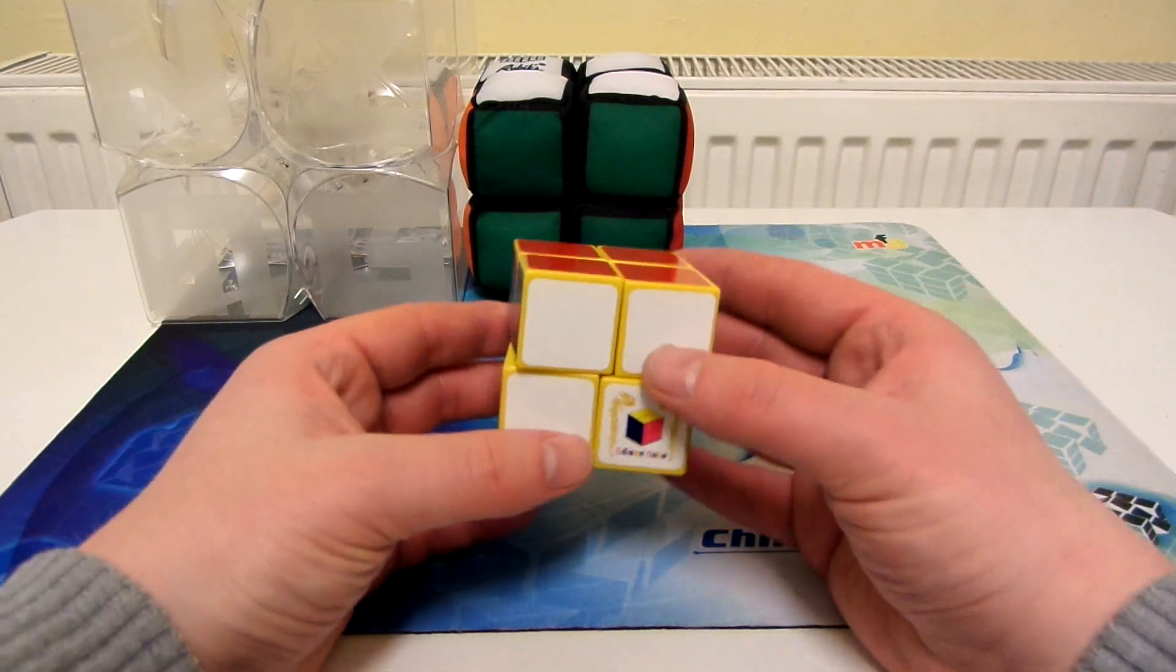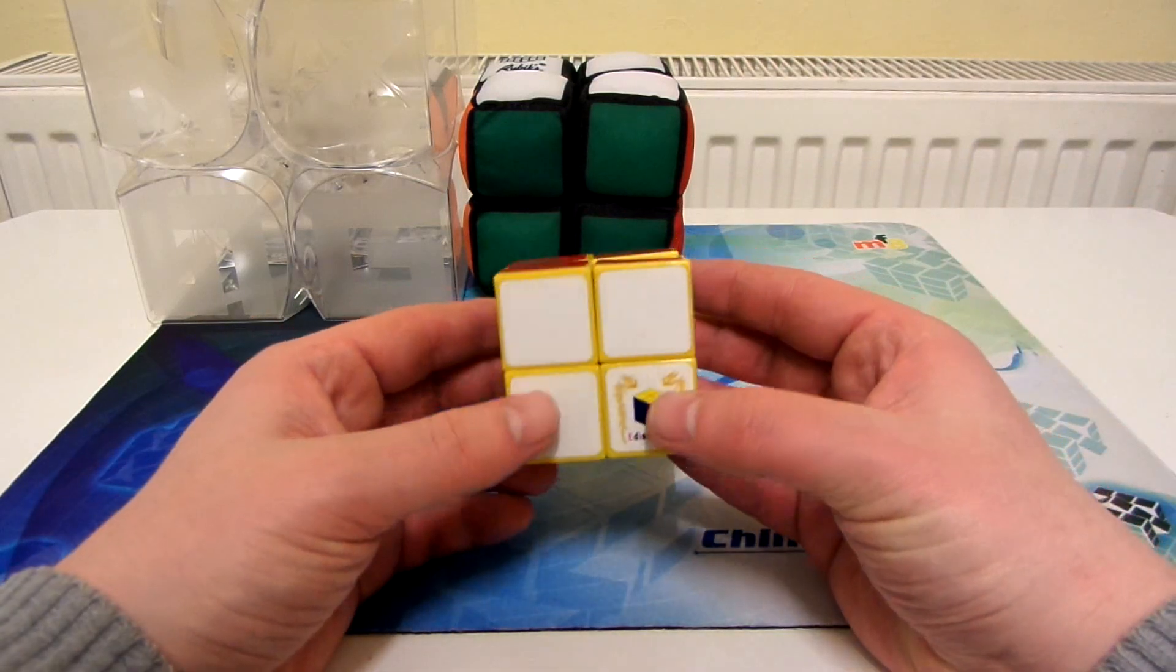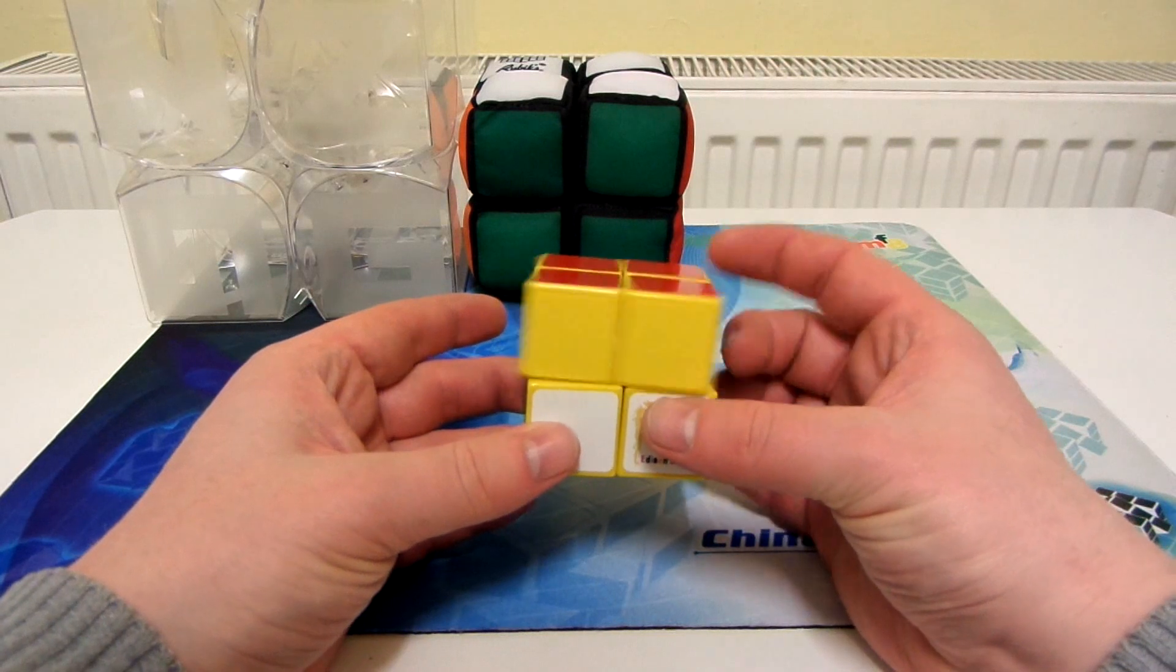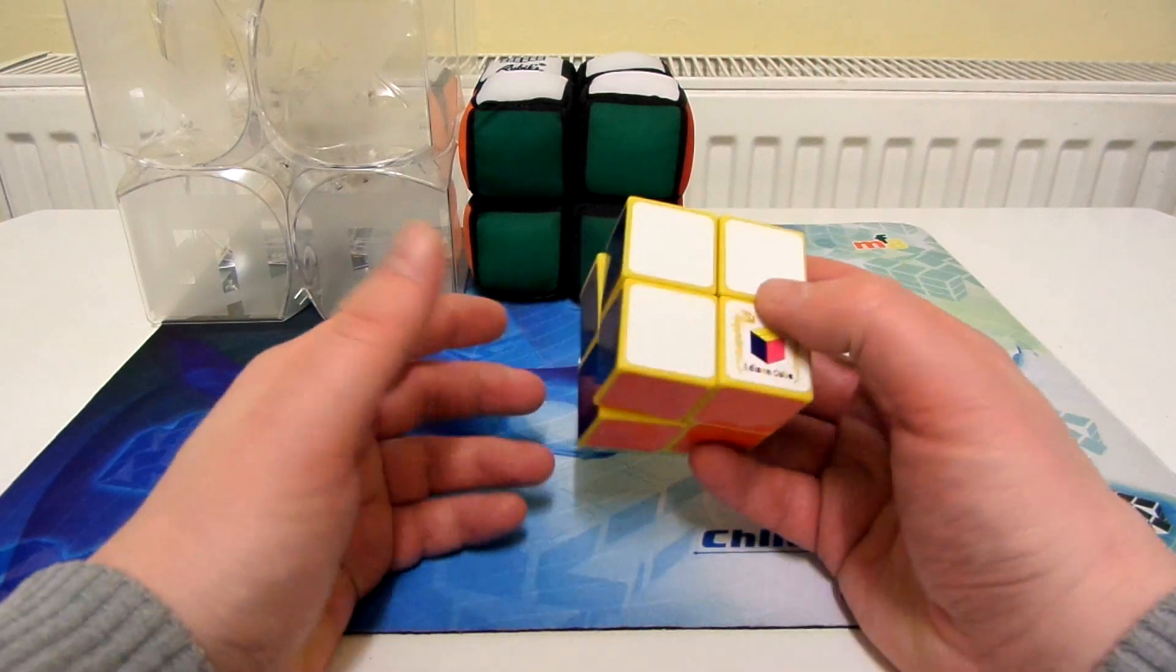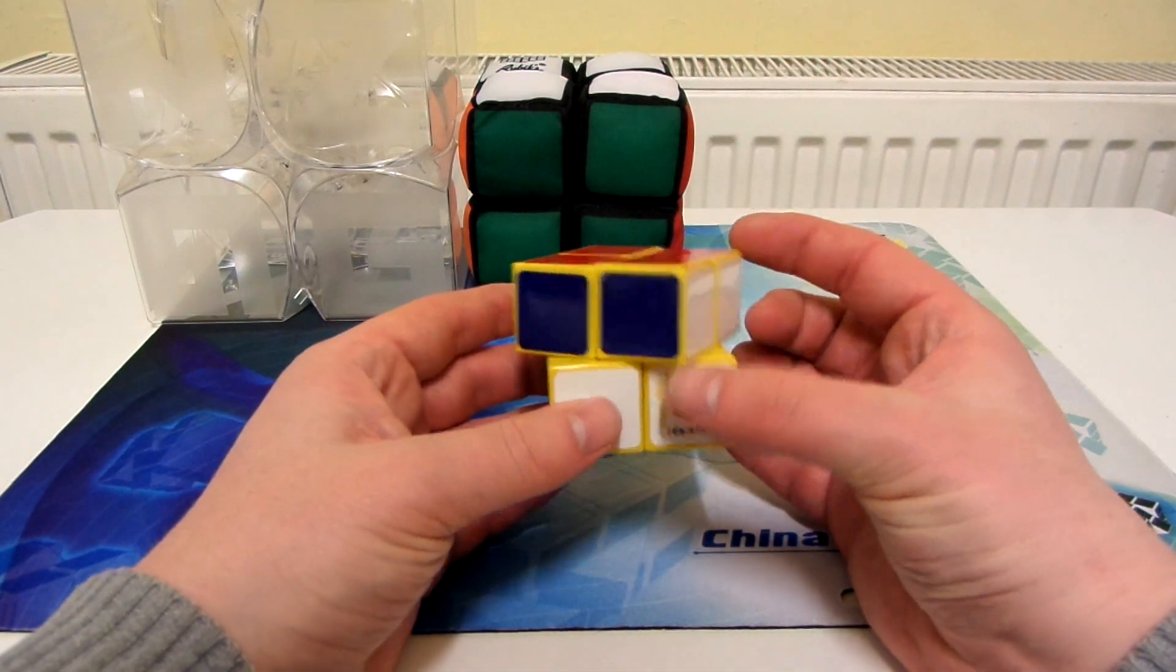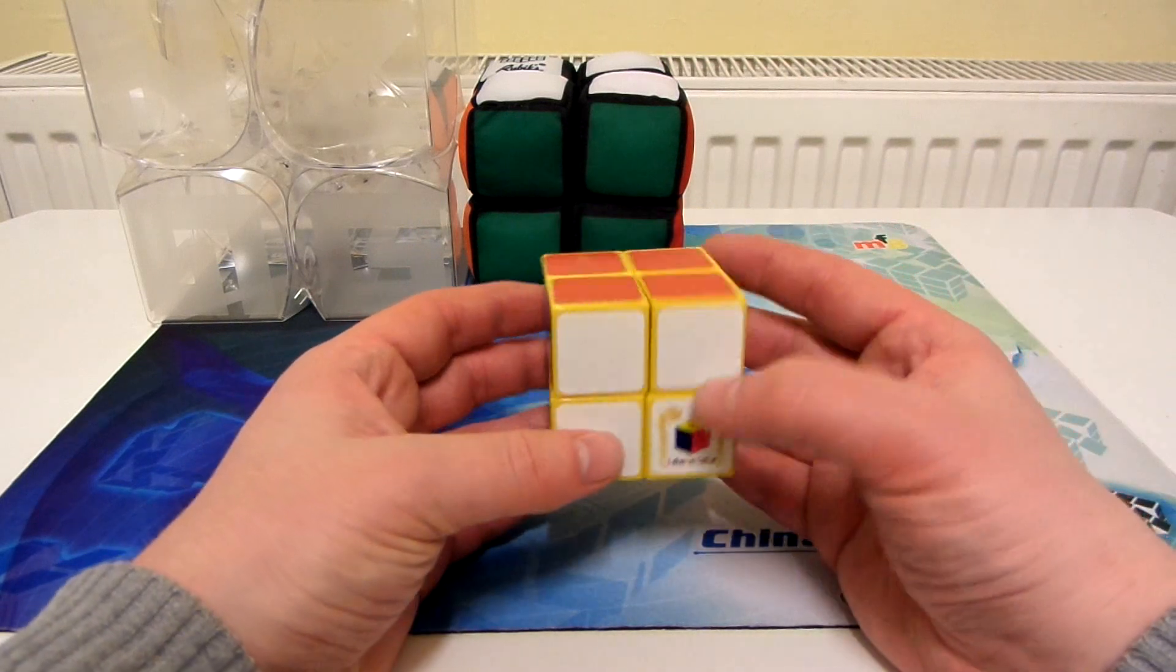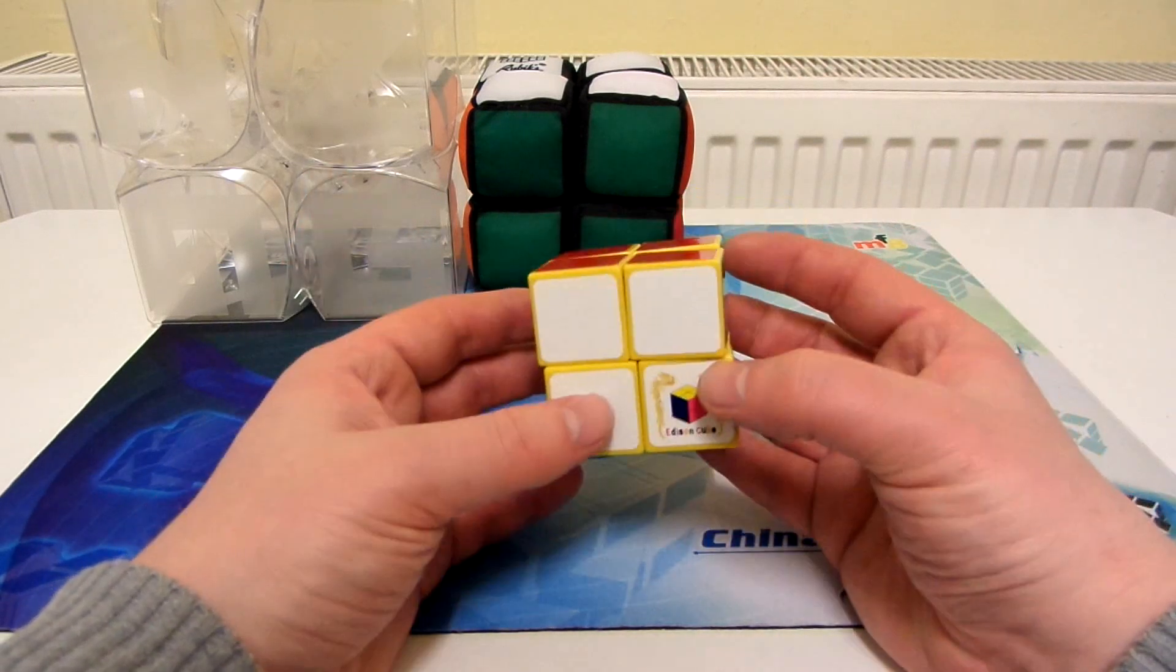Here we have the Edison 2x2. Yeah, it's barely got any corner cutting at all, but I really like the way it looks, and I still kind of find it fun to solve, and it's a very rare puzzle as well.